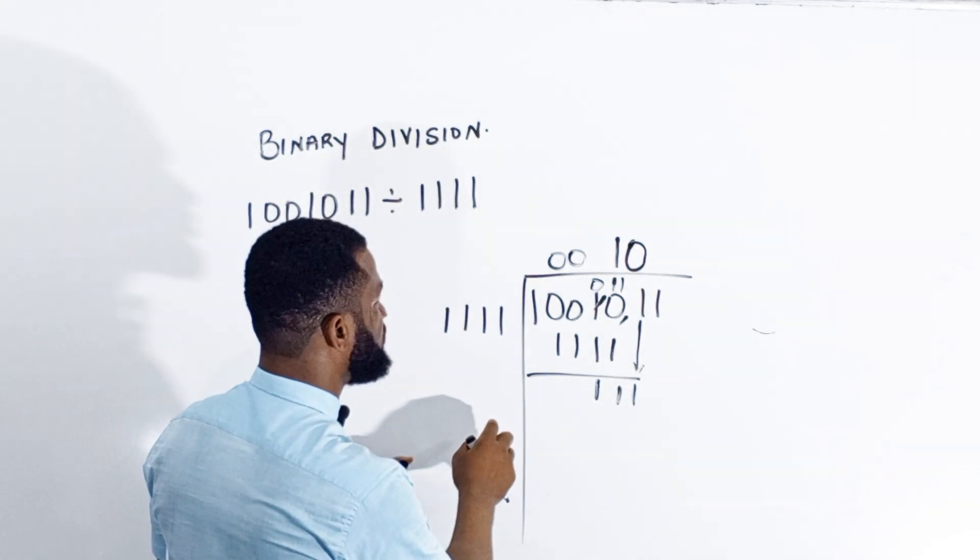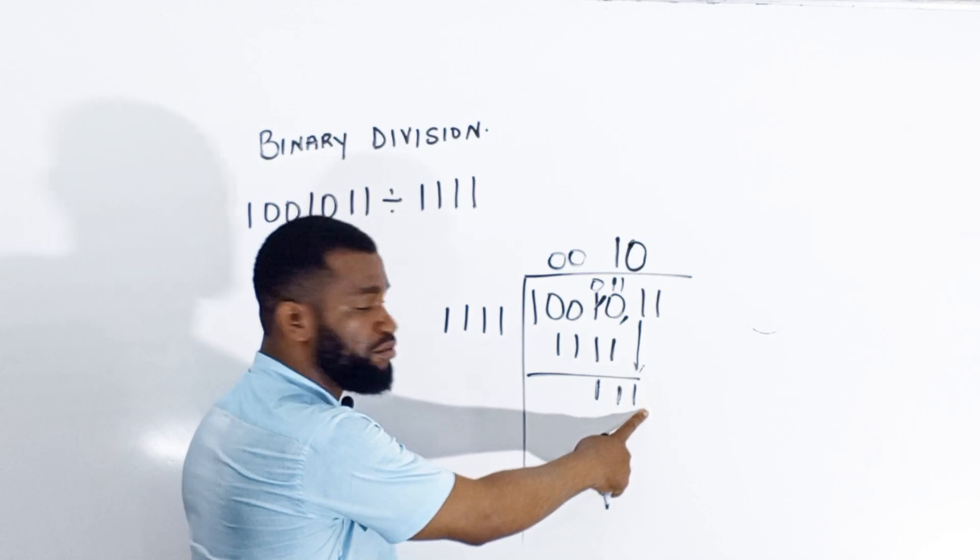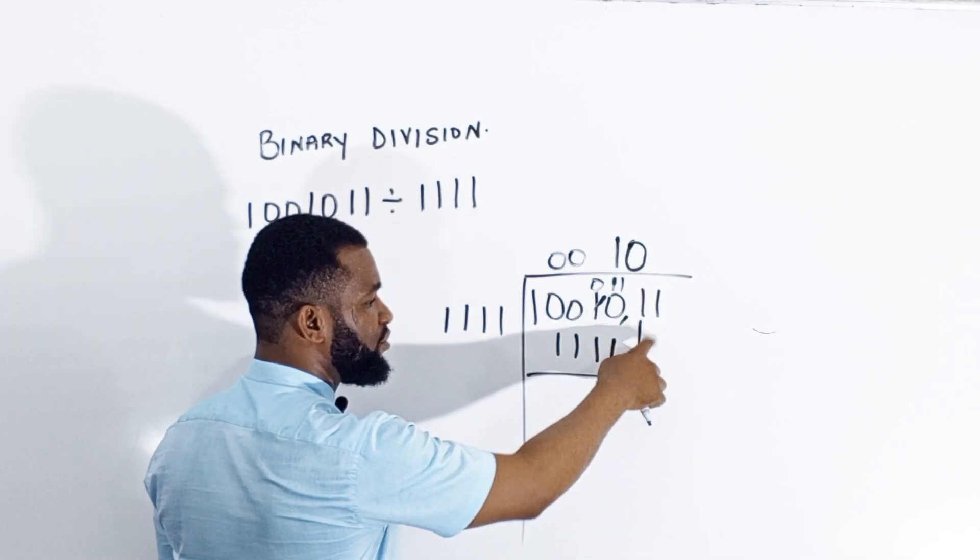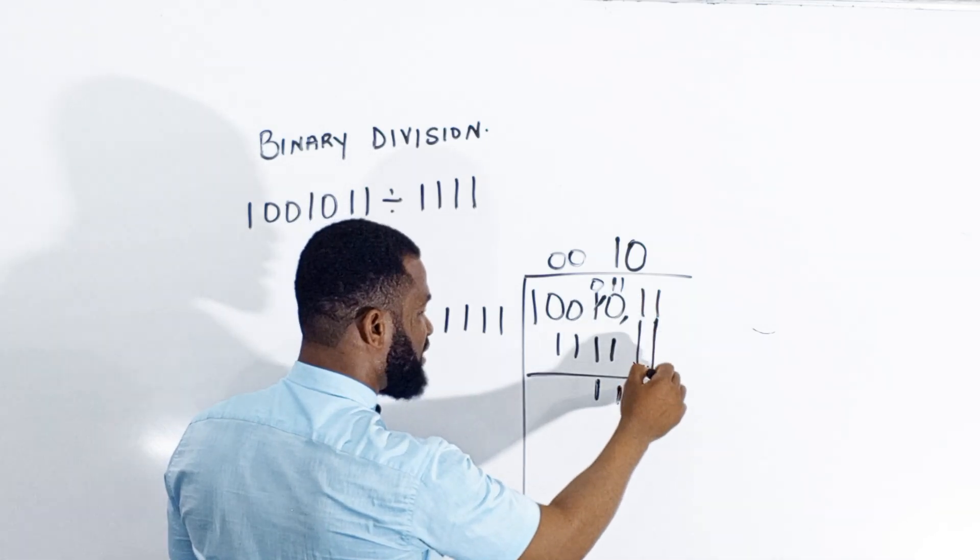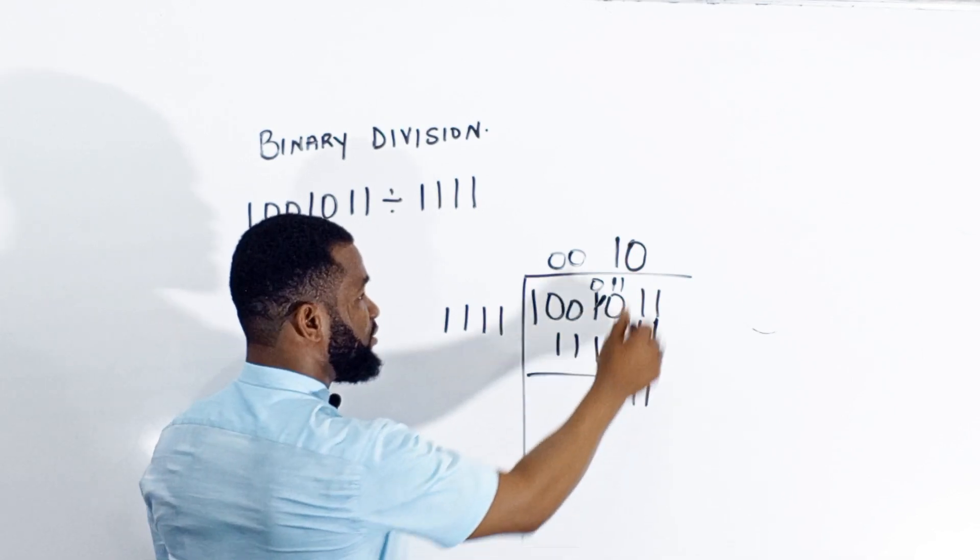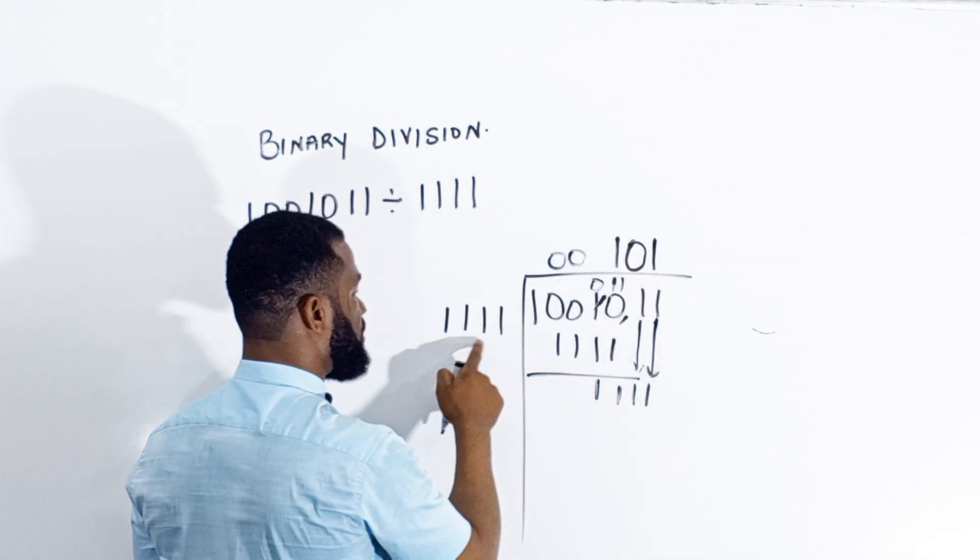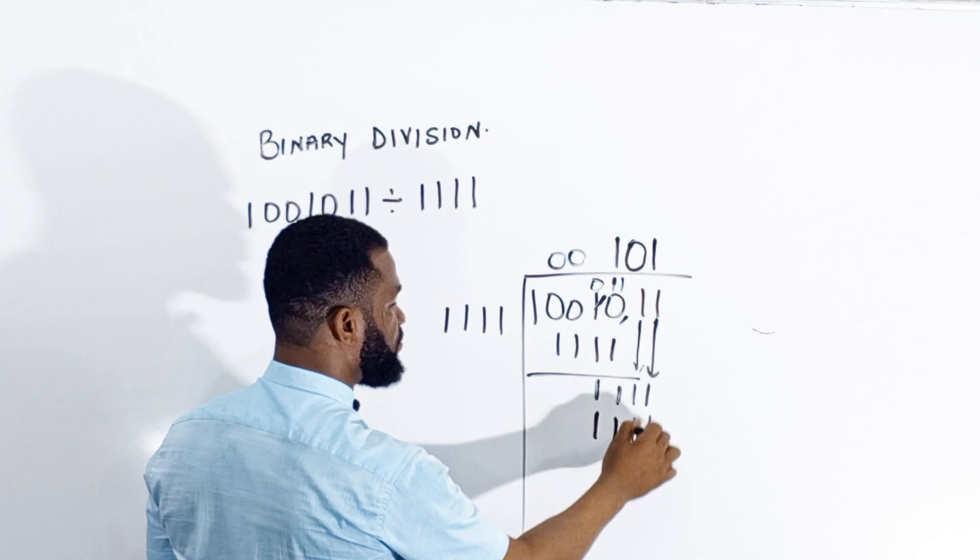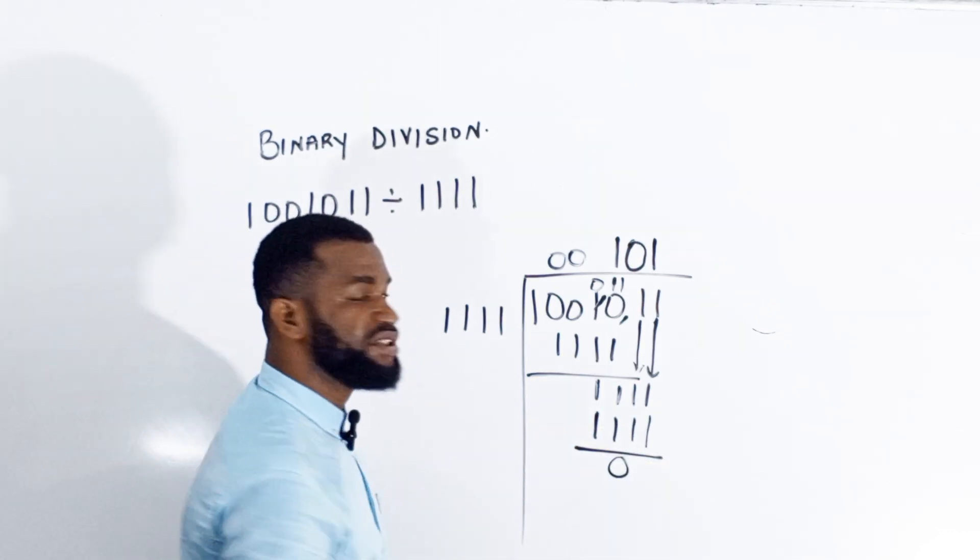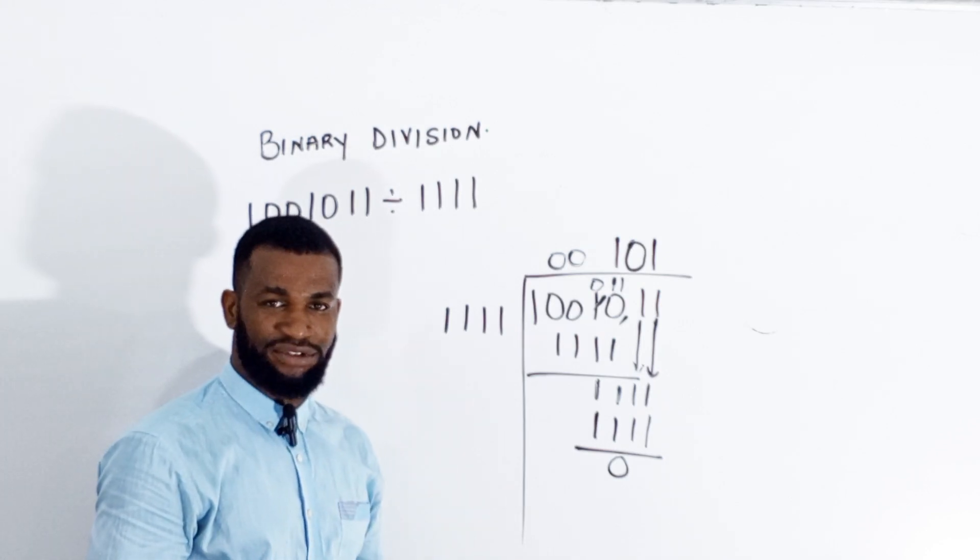1, 1, 1, 1 minus 1, 1 is going to be 0. This is the answer to this binary division.